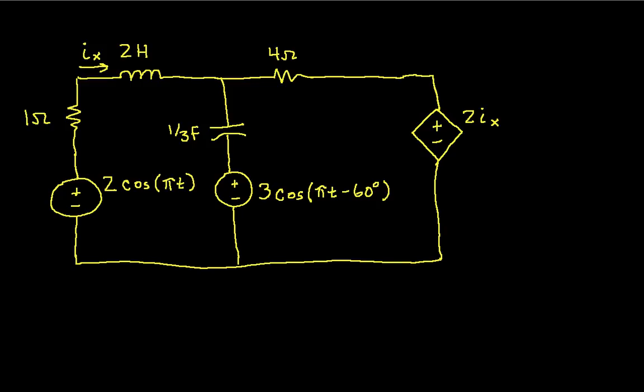Our first step is to convert our voltages into phasors. So we look at what we have here. We can see that omega is equal to pi and we have a 2 cosine pi T, so we can change this into a phasor, which would just be 2 at an angle of 0.